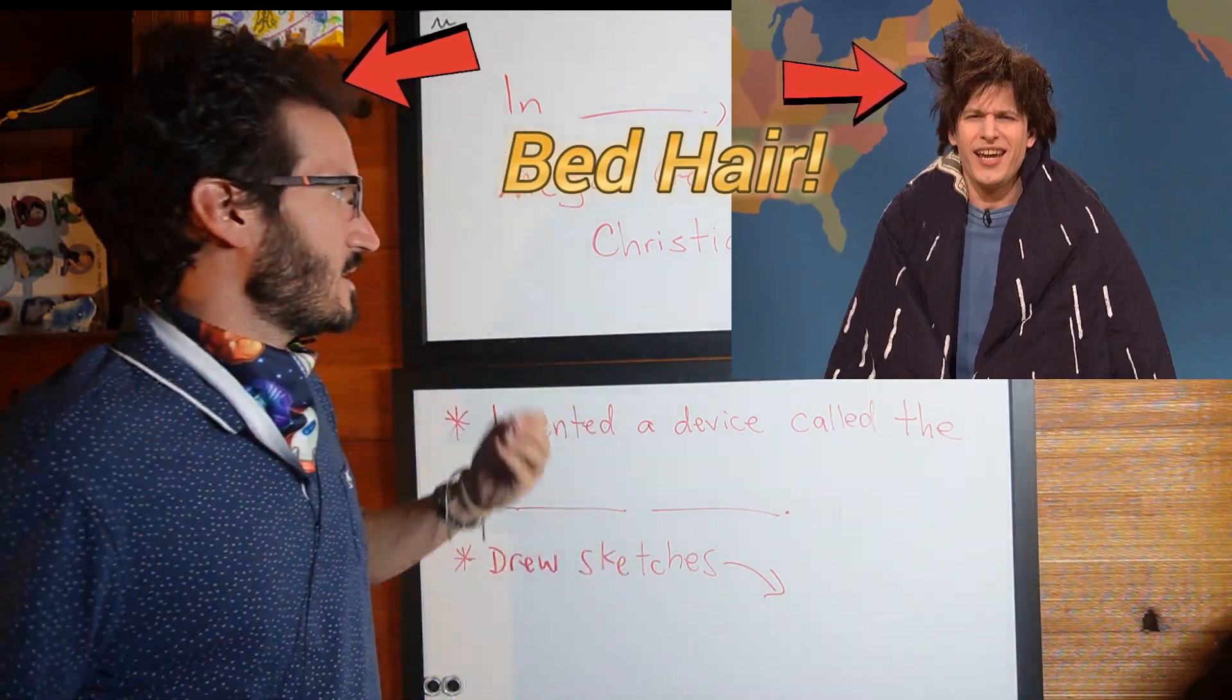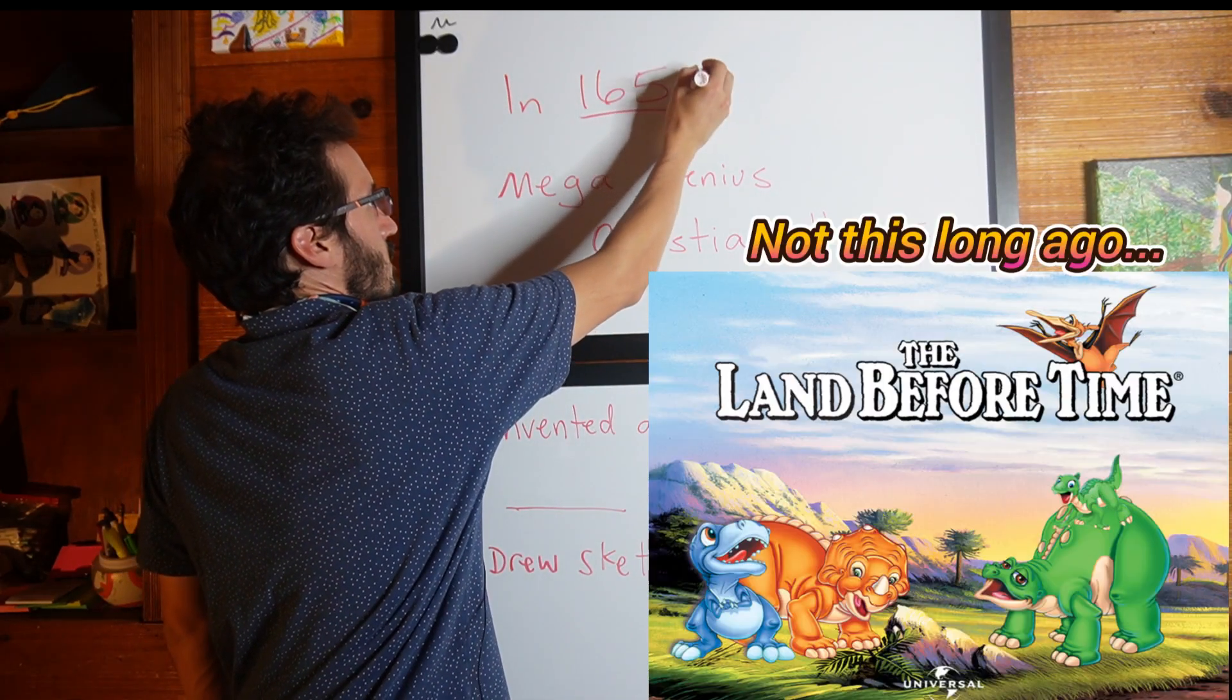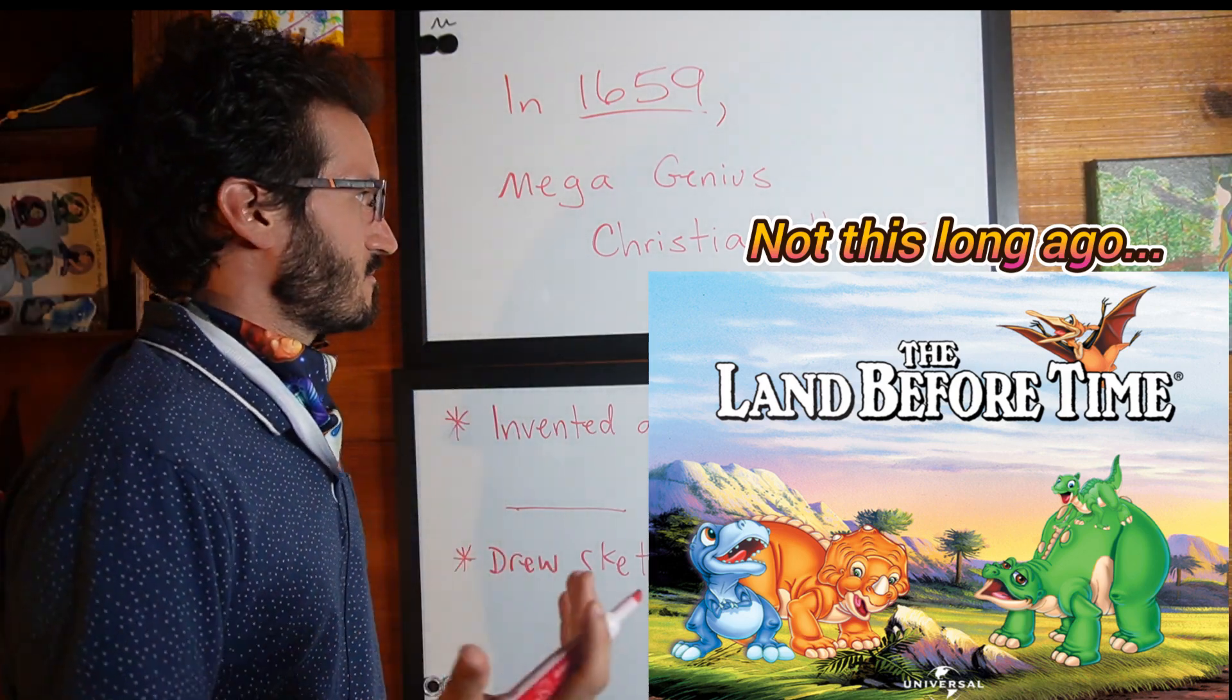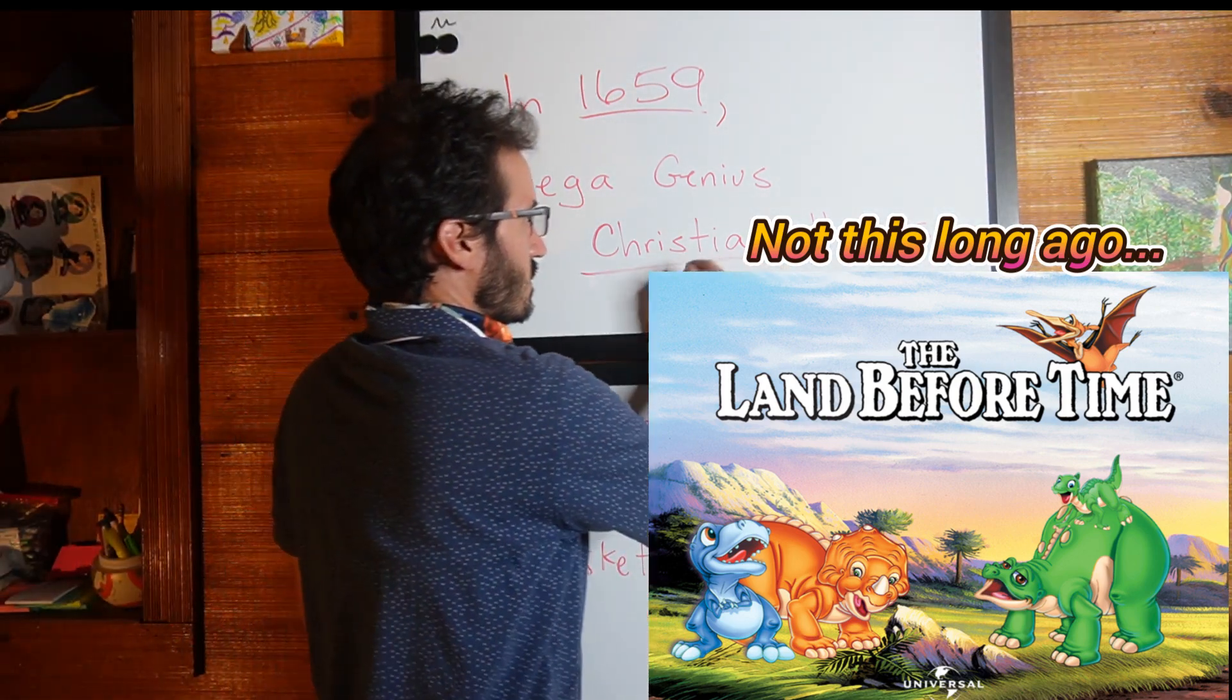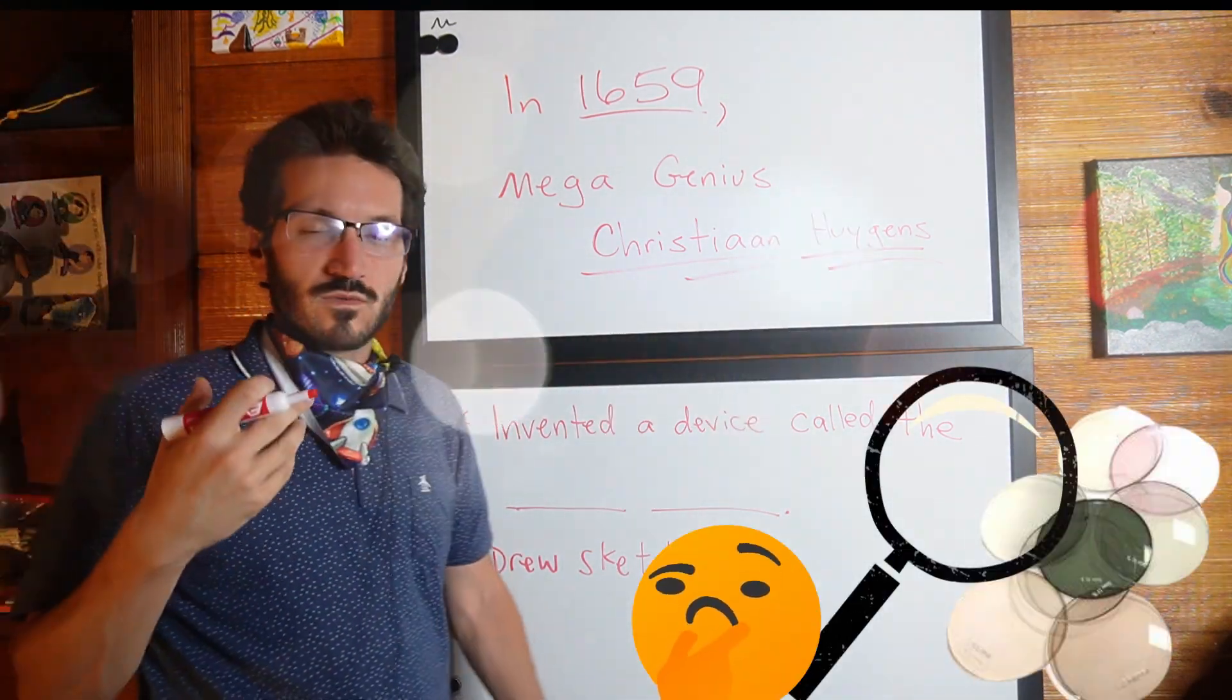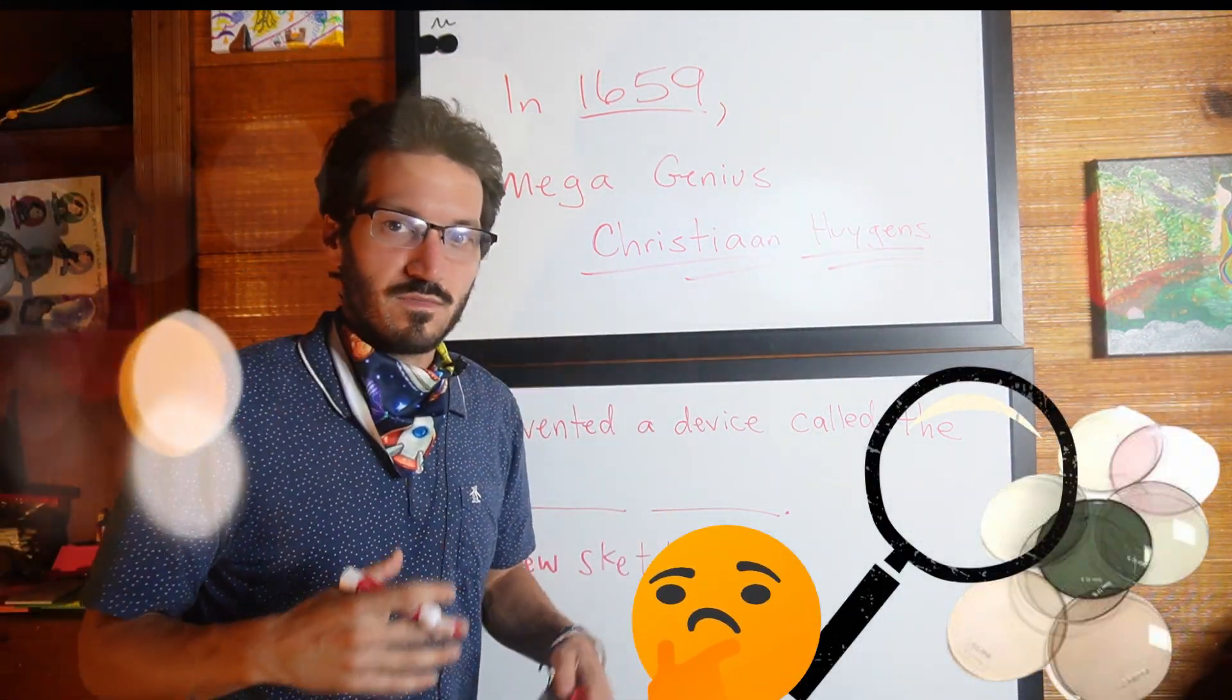In 1659, a long time ago back in ancient times—not exactly—our Christian Huygens, brilliant scientist and astronomer, worked with lenses and glass and came up with theories of light being waves.